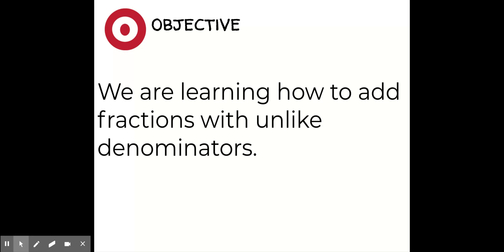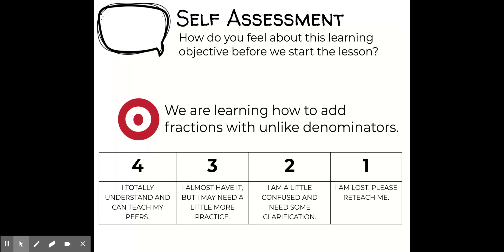I'll repeat the objective one more time: we are learning how to add fractions with unlike denominators. Before we get started, I want you to think about how you feel about this lesson. Think about the objective. Are you at a level four — do you totally understand and can teach your peers? Are you a level three — you almost have it but need a little more practice?